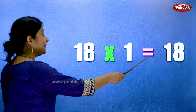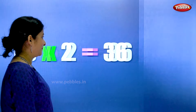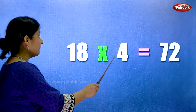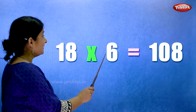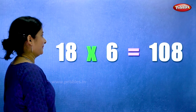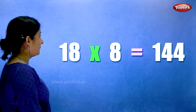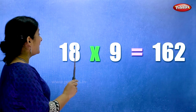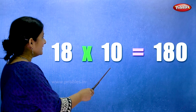Eighteen ones are eighteen. Eighteen twos are thirty-six. Eighteen threes are fifty-four. Eighteen fours are seventy-two. Eighteen fives are ninety. Eighteen sixes are hundred and eight. Eighteen sevens are one twenty-six. Eighteen eights are one forty-four. Eighteen nines are one sixty-two. Eighteen tens are one eighty.